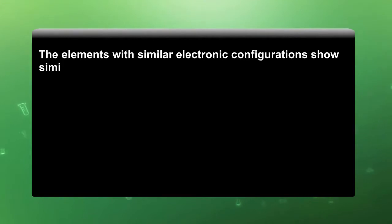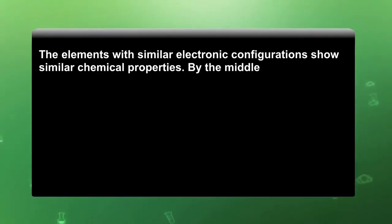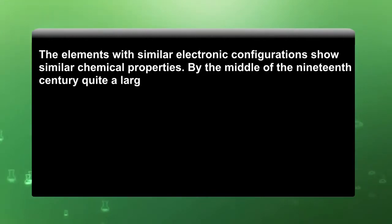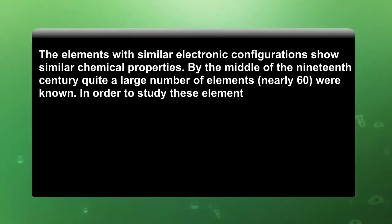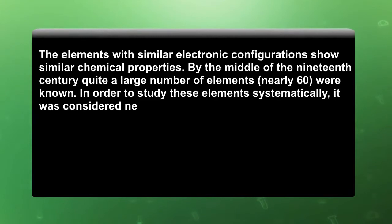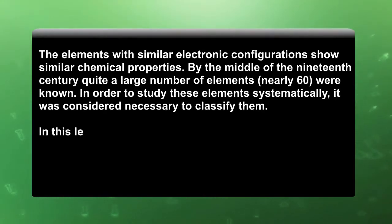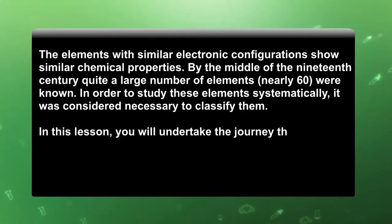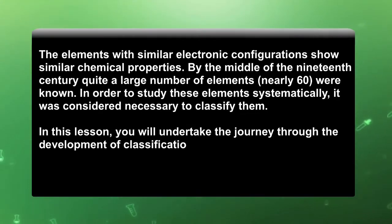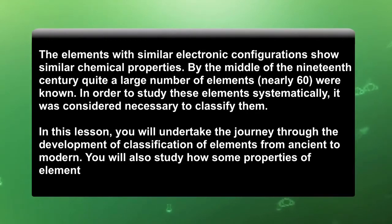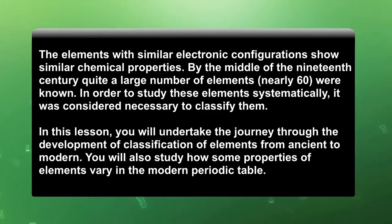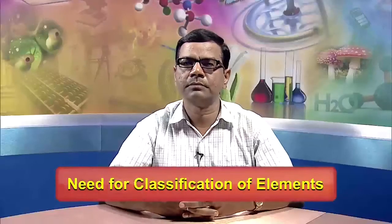The elements with similar electronic configuration show similar chemical properties. By the middle of the 19th century, quite a large number of elements — nearly 60 — were known. In order to study these elements systematically, it was considered necessary to classify them. The need for classification of elements: